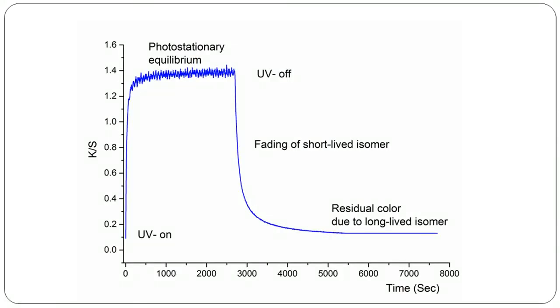If you see this diagram it's very easy to understand. Here we apply the ultraviolet radiation that means UV on. The photochromic materials absorb UV energy and it gets excited, and after excitation it becomes colored and it gets photostationary equilibrium.